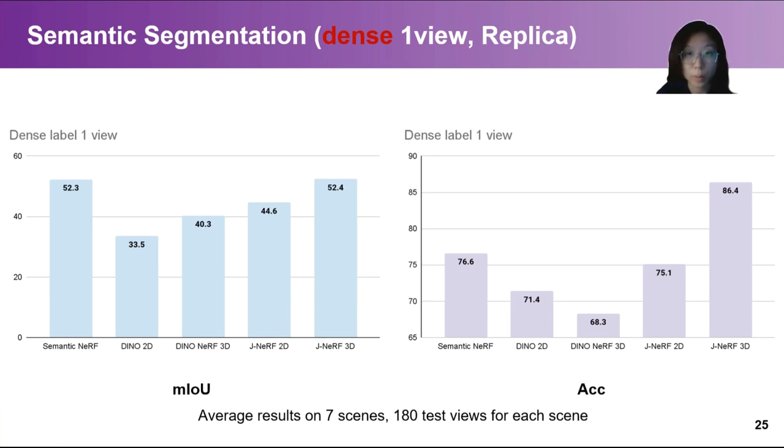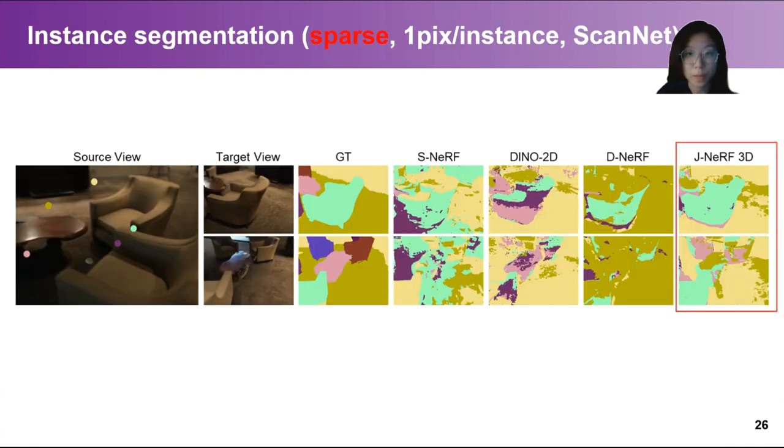Moreover, the propagated labels using Jacobi NERF achieve much higher accuracy.